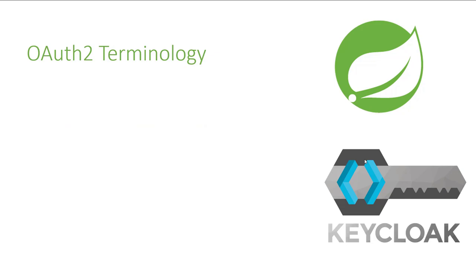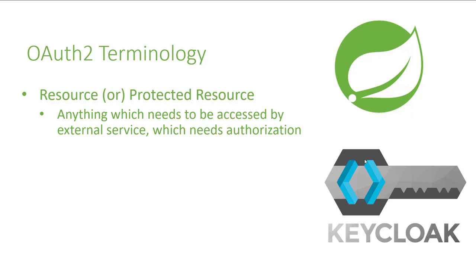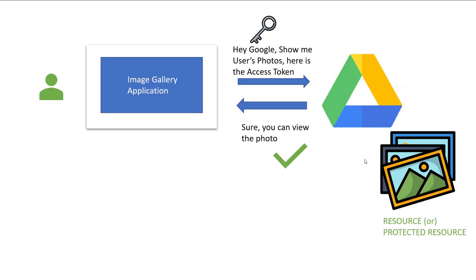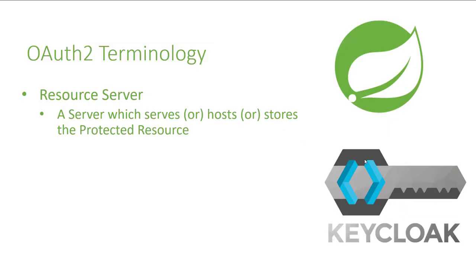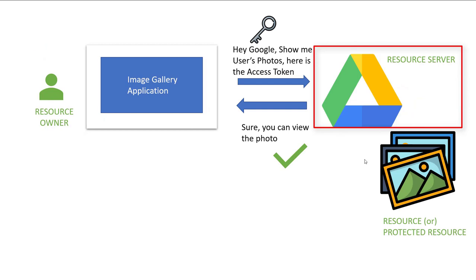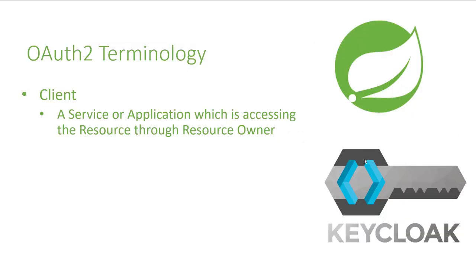Now let's cover commonly used OAuth terminology. The first is a resource or protected resource — in our example, the photos stored in Google Drive. Anything that needs authorization to be accessed is called a resource. The resource owner is the owner of the resource — in this case, the user. The resource server is the server hosting the resource — here, the Google Drive server. The client is the service or application accessing the resource, in our case the image gallery application.